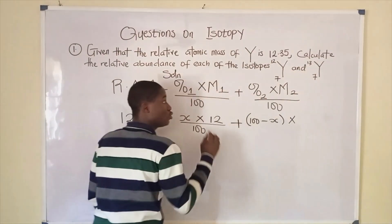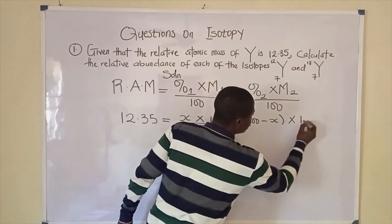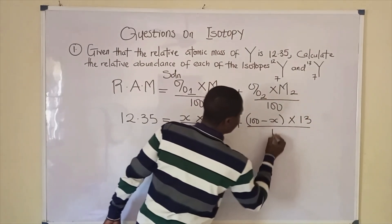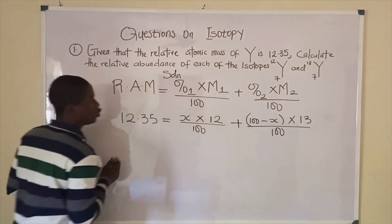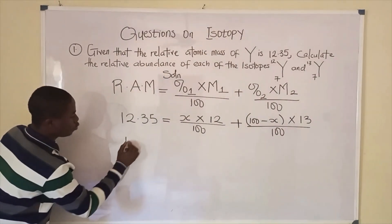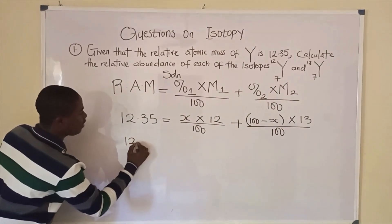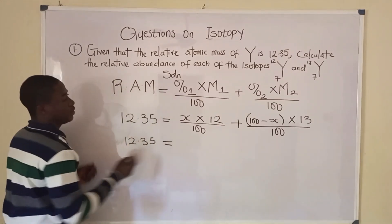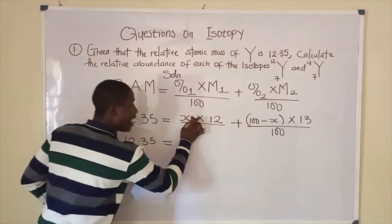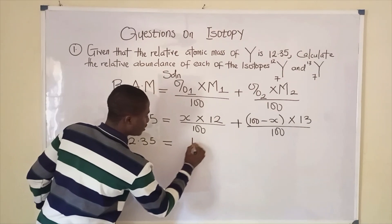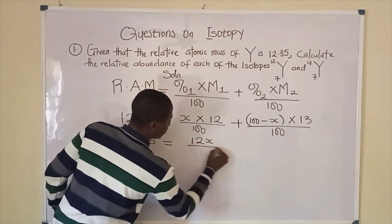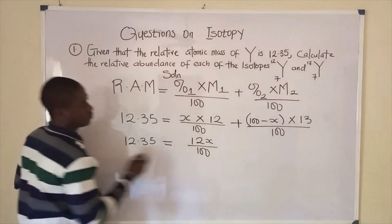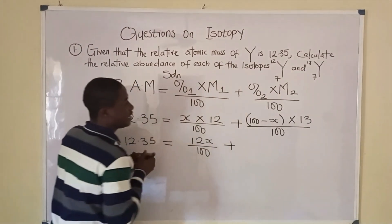The mass number of the second isotope is 13, so we say 13 over 100. Proceeding, we have 12.35 equals X times 12, giving us 12X over 100, plus opening the bracket for 100 minus X times 13 over 100.